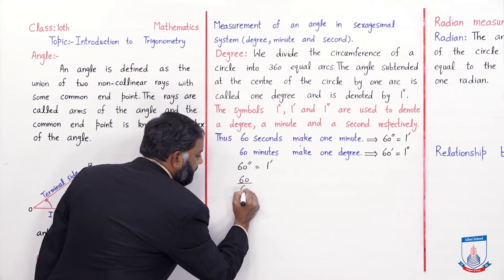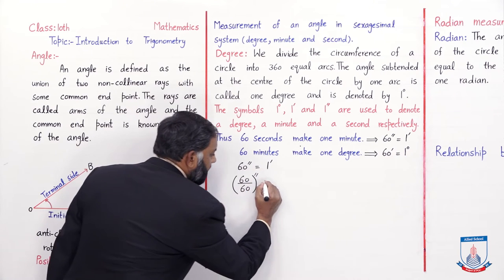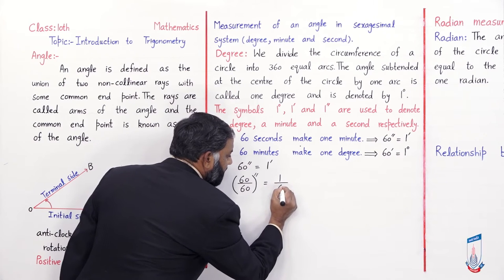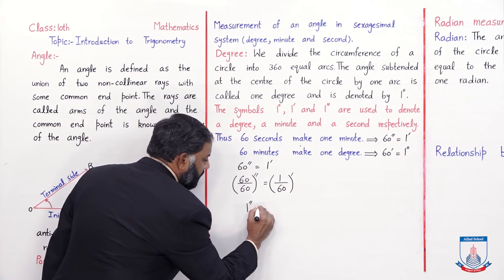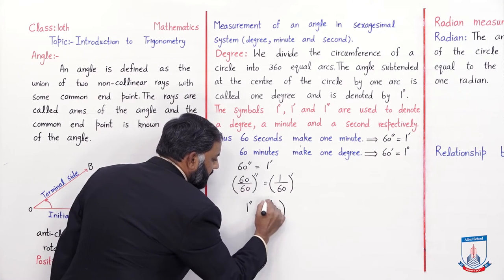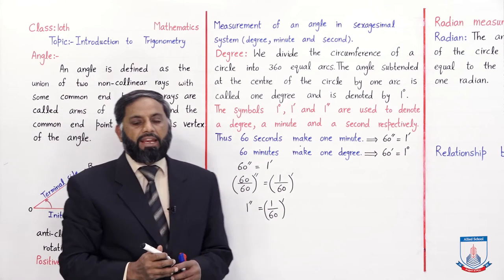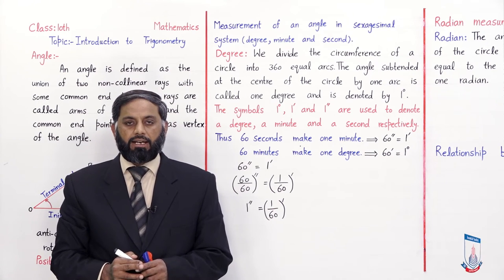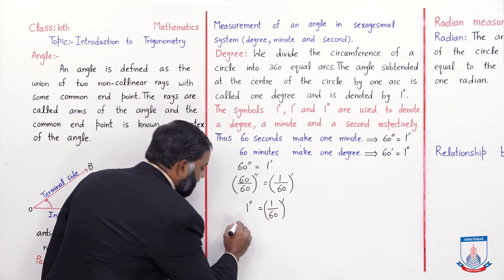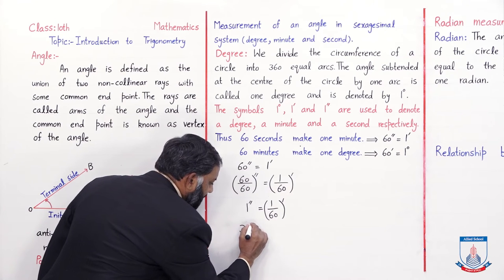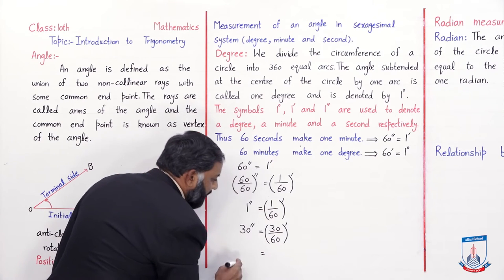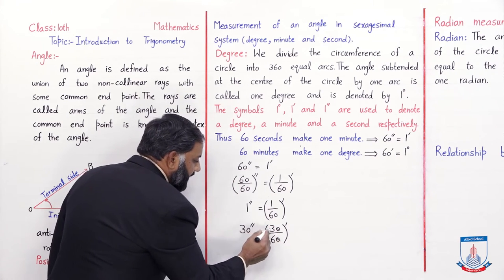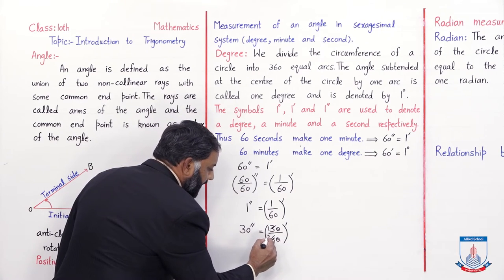If we want to convert seconds to minutes, we divide by 60. So 60 seconds divided by 60 equals 1 divided by 60 minutes. For example, if we have 30 seconds: 30 divided by 60 gives 30 over 60 minutes.